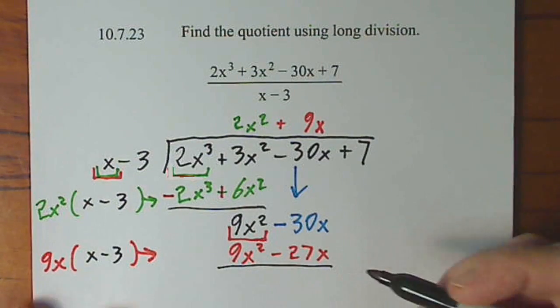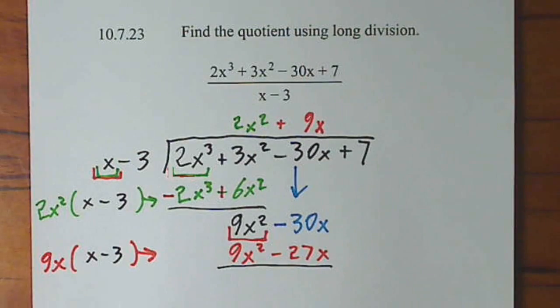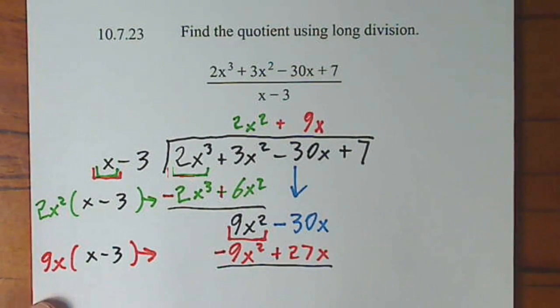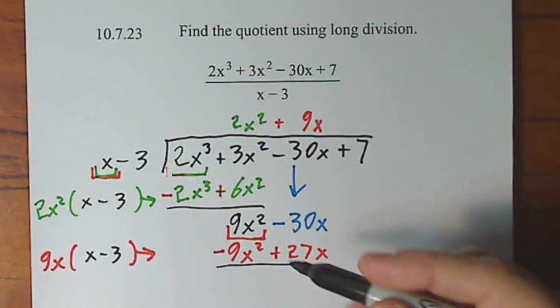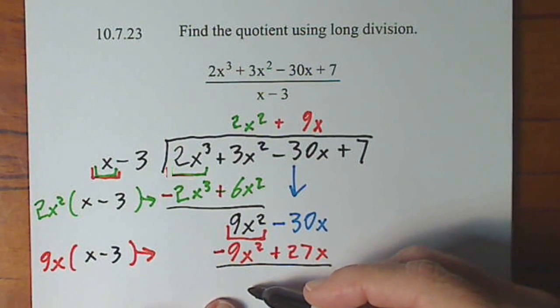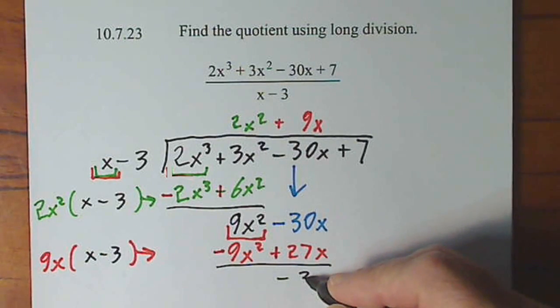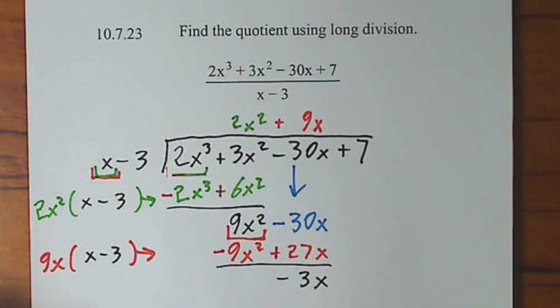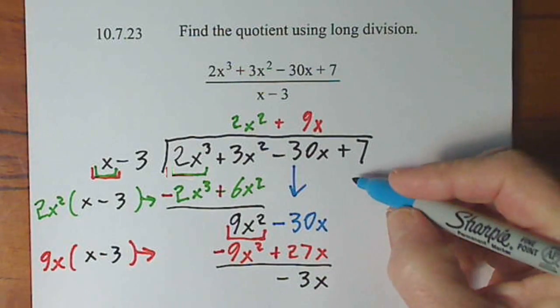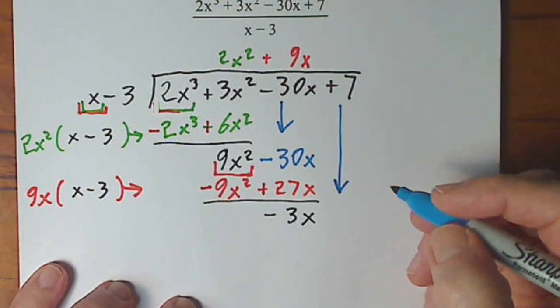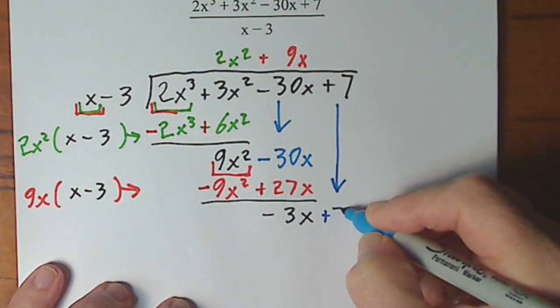And again, we're going to subtract these, but we're subtracting each term, which means I have to change the sign of each term. Now we see what's left. That becomes zero. We don't have to write it. We're left with negative 3x here. And just as in long division, you bring down your next term. So this is plus 7.